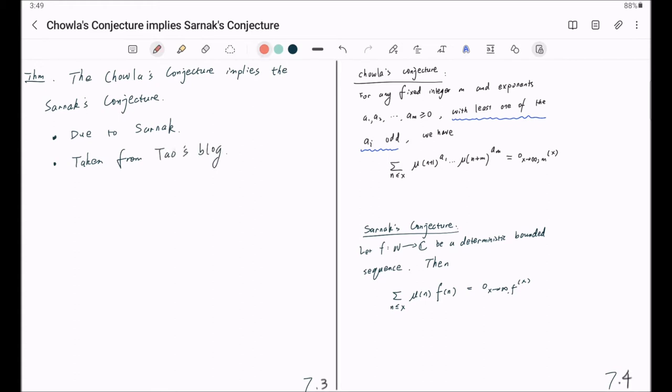The key idea of the proof is the following. You try to translate the statements of those two conjectures into the language of probability. So, how does this translation go?